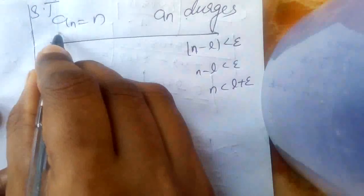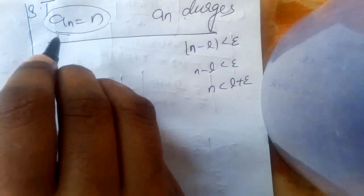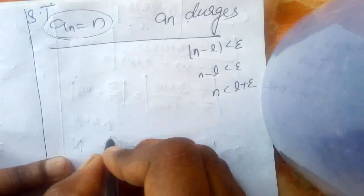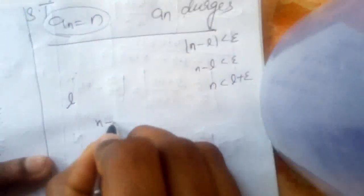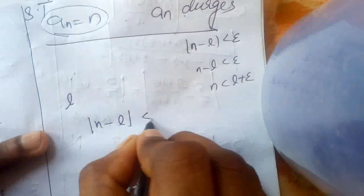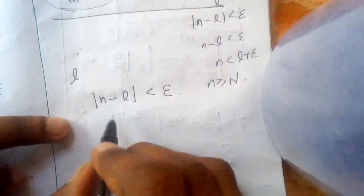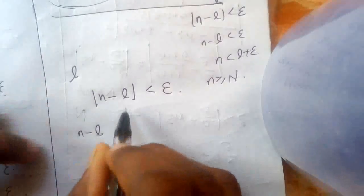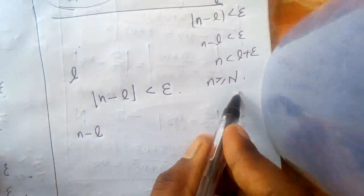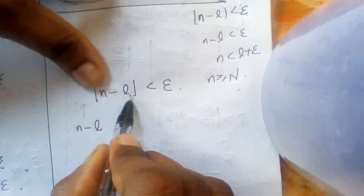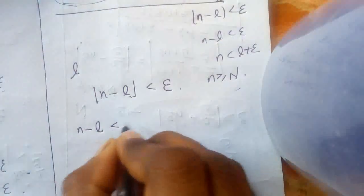Suppose N goes to a particular number and a limit L exists. Then |N − L| < epsilon for all n ≥ some N. That means N < L + epsilon. But N is a large value and L is a small fixed value, so N − L cannot always be less than epsilon.